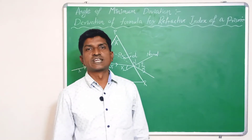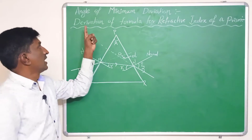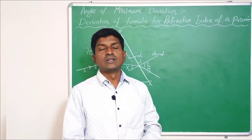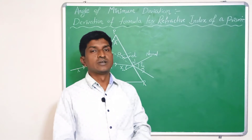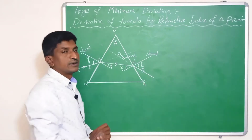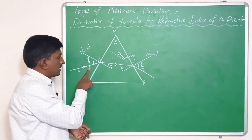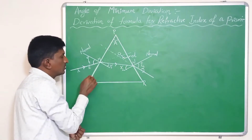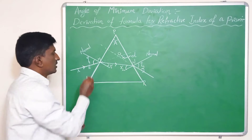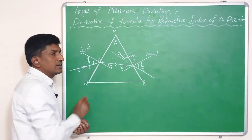Hello children, welcome to Physics Learning Point. In this video we are discussing angle of minimum deviation and derivation of formula for refractive index of a prism. Here PQR is the outer line of a prism and AB is the incident ray, which is incident on PQ at point M. This is the normal line. i1 is the angle of incidence and r1 is the angle of refraction.